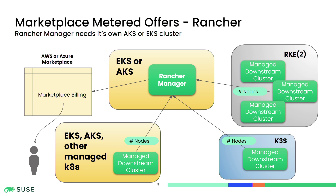With Rancher Manager, you can also manage downstream clusters, and it doesn't really matter where they run — they can run in EKS, AKS, or any other Kubernetes. They can run in your data center on RKE2, in the cloud on RKE2, or on K3S. What we're getting is the number of nodes running in each cluster, and that's what we're ultimately reporting. Rancher Manager runs in its own control plane — this is important to remember. NuVector runs in your cluster, in the cluster that you're monitoring. That's an important difference.